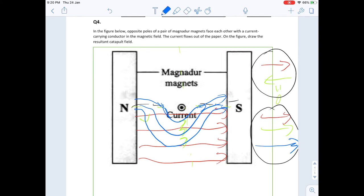It's called a catapult field because it's like pulling a slingshot backwards, and when you release it there's a force that's going to propel the cable upwards. The cable is going to experience a force that pushes it forward. This is related to Fleming's left-hand rule.